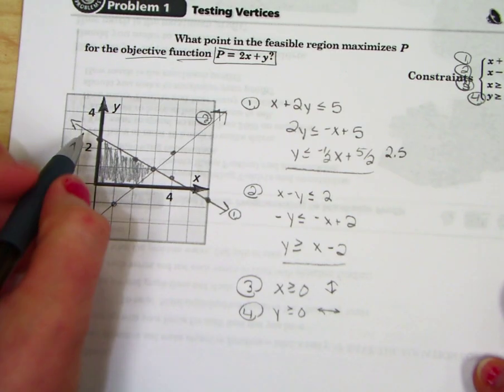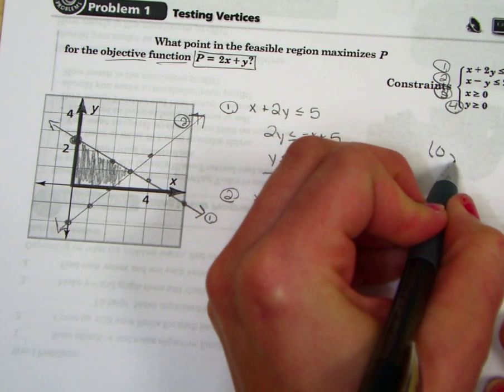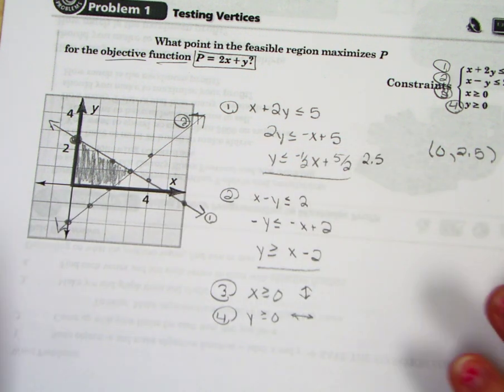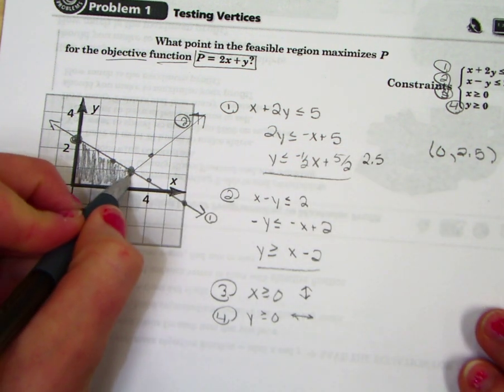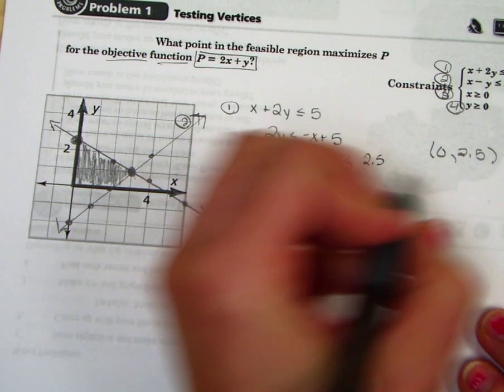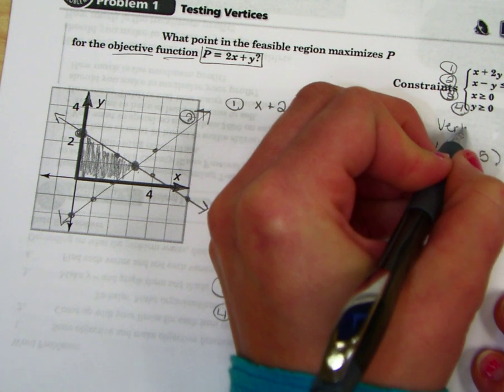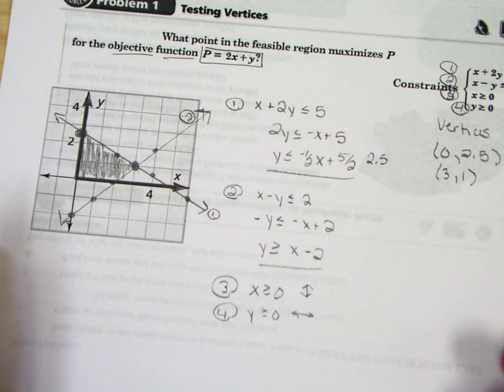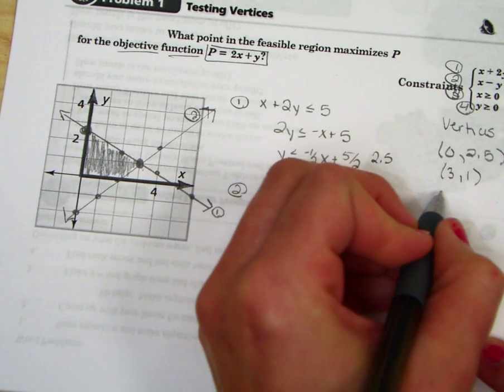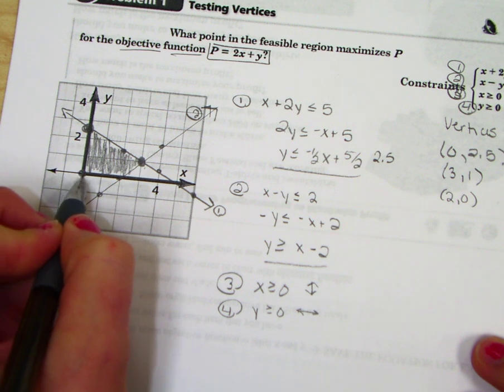The first corner I see is right here. That happens at 0, 2.5. And these are just the corners of your shaded area. Here's the next vertice. It happens at 3, 1. We can label these. Next, we're going to look at 2, 0. And the last one, 0, 0.